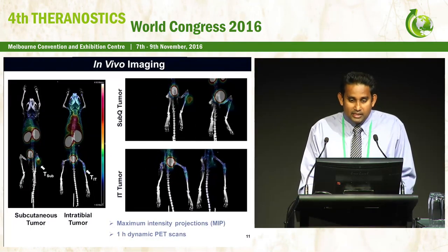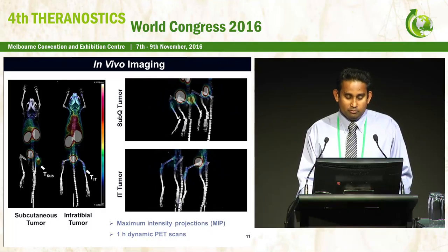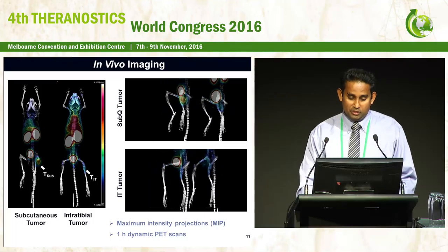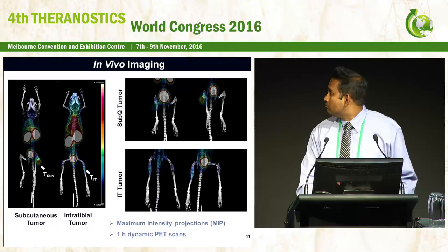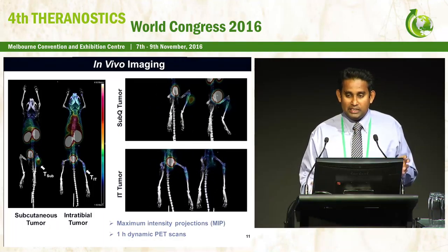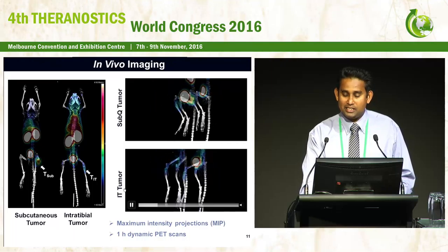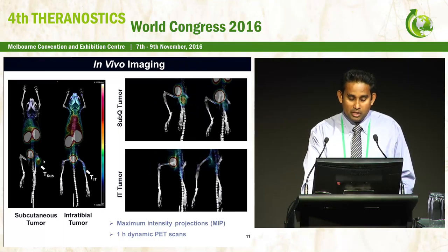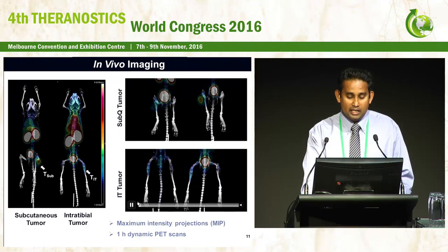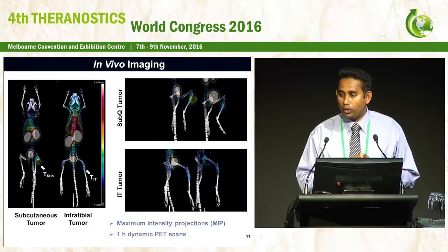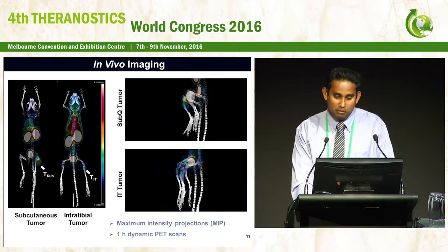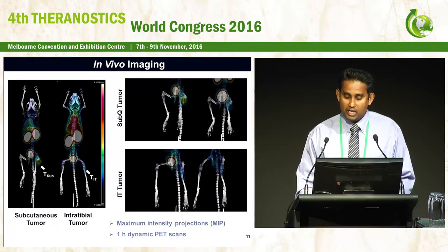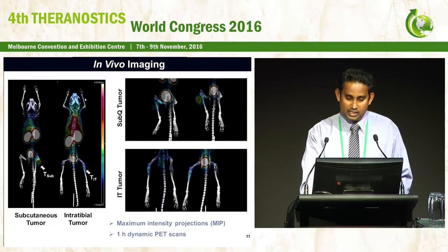We have done many PET studies; I have shown two of them. In the figure, what's on the left is the subcutaneous tumor and what's on the right is the intratibial tumor. The subcutaneous tumor has been grown in the extra-medullary environment, and the intratibial tumor is actually within the bone. Tracer accumulation shows nicely in both. These are maximum intensity projections from one-hour dynamic PET scans, all displayed on the same PET scale.